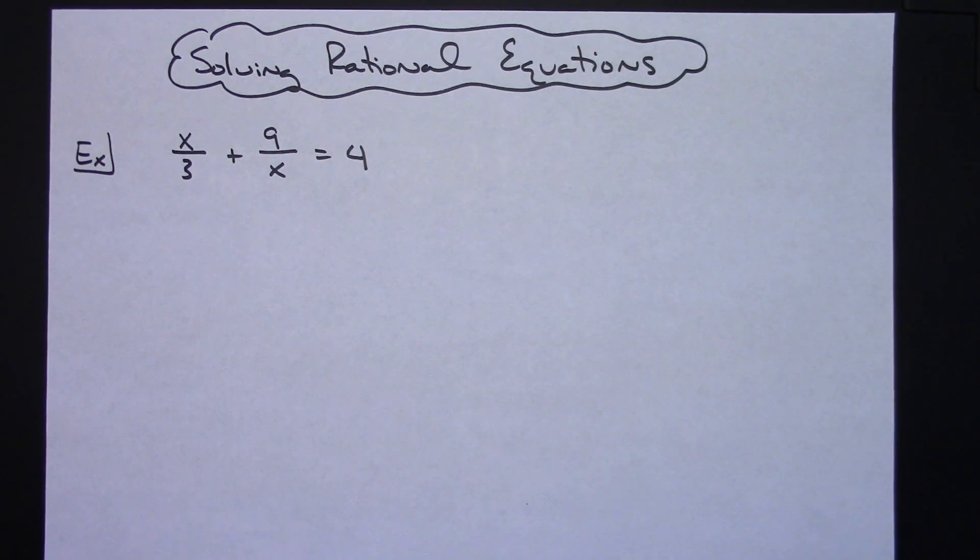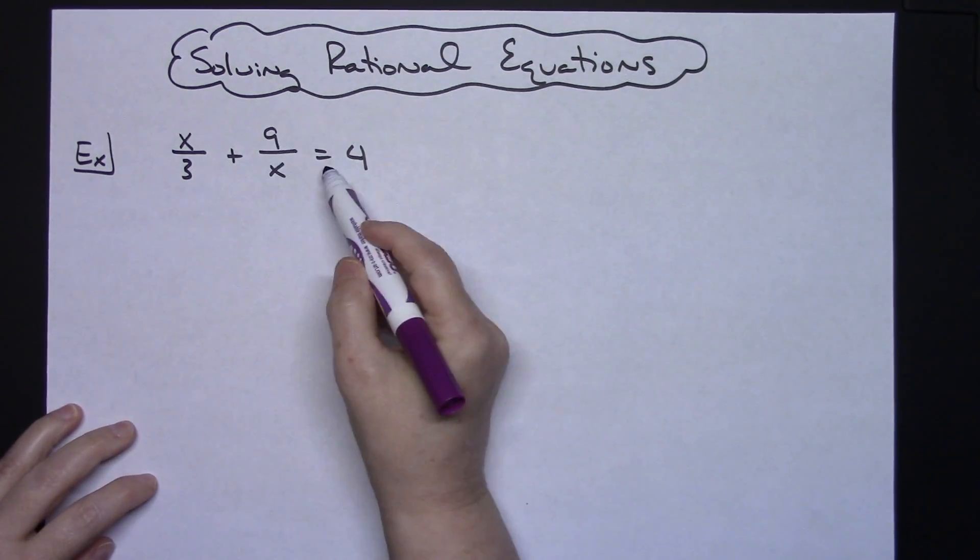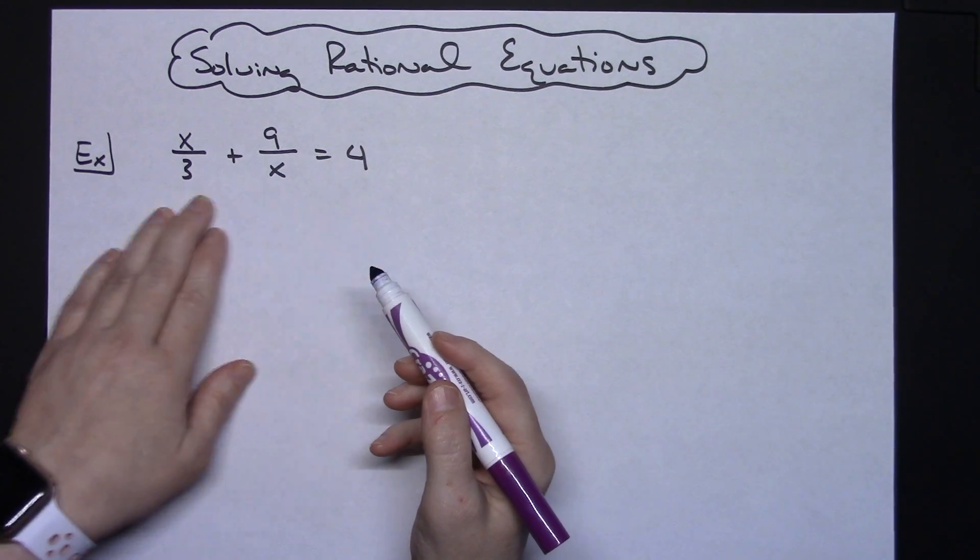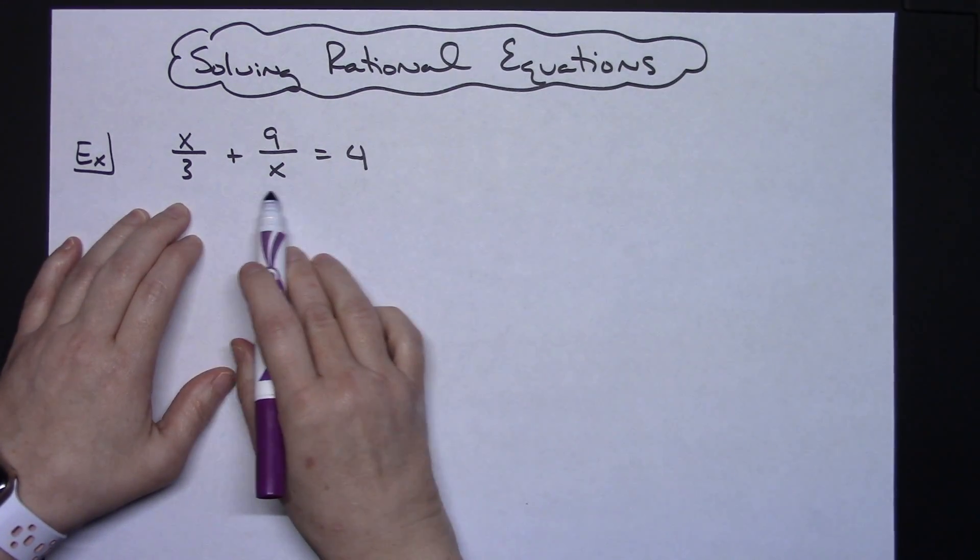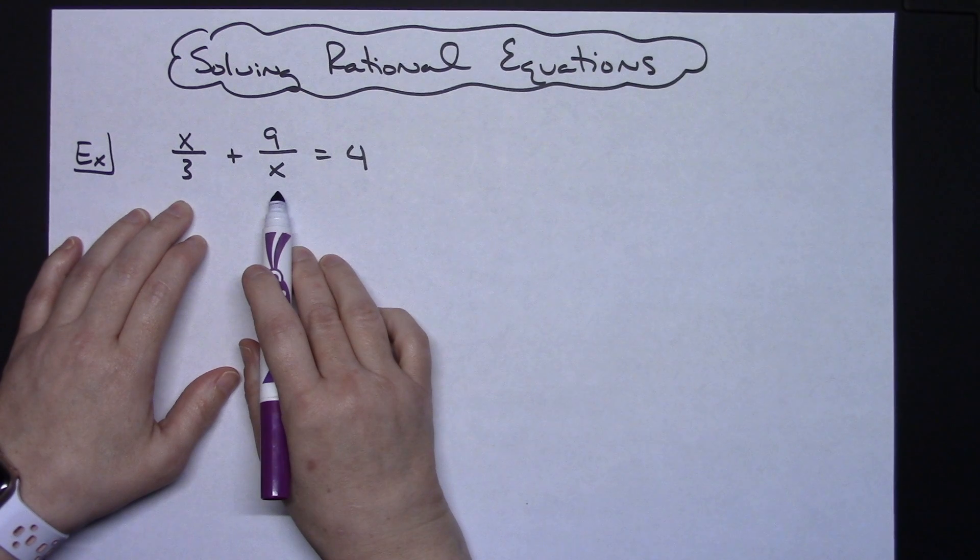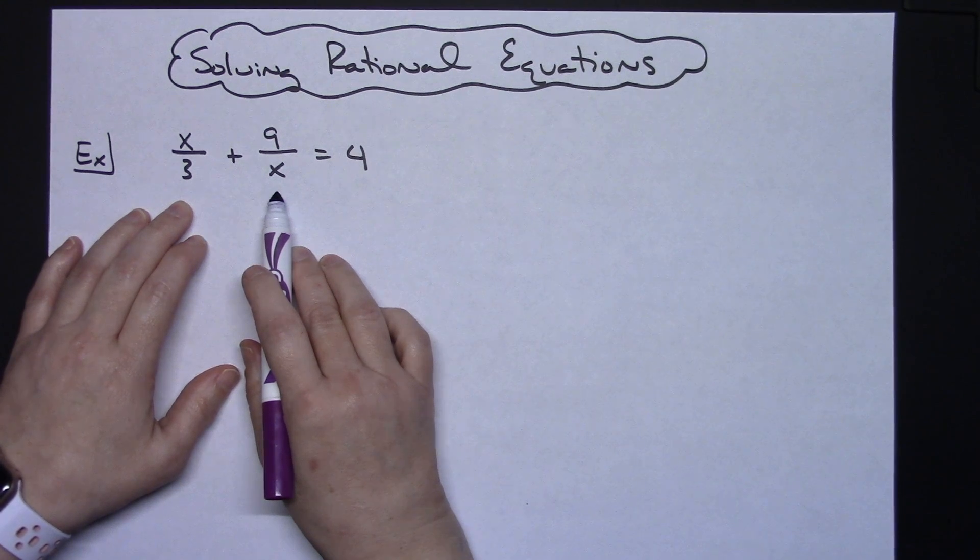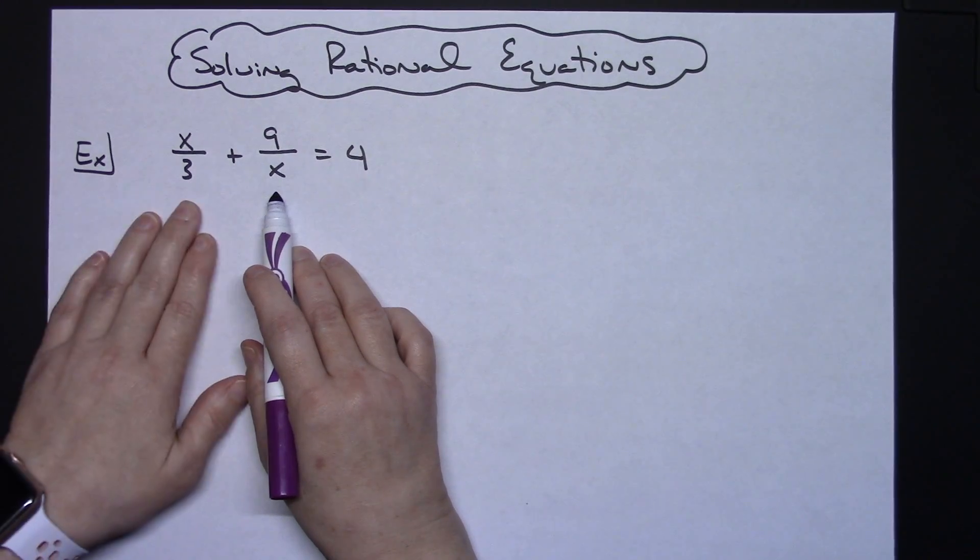In this example I've got x over 3 plus 9 over x equals 4. The first thing I need to do is look at my denominators and find out if there are any restrictions. Because as you know, we cannot divide by 0.